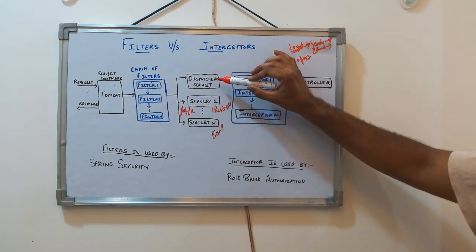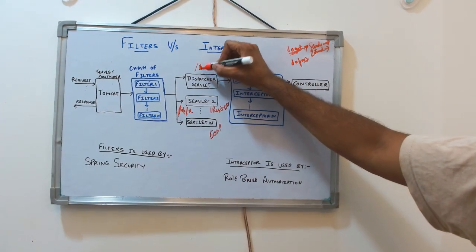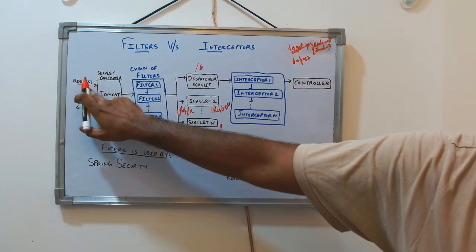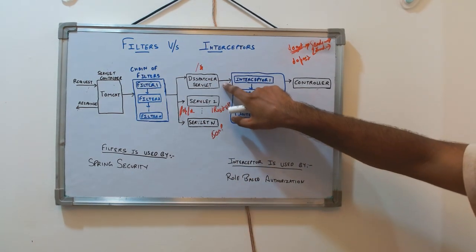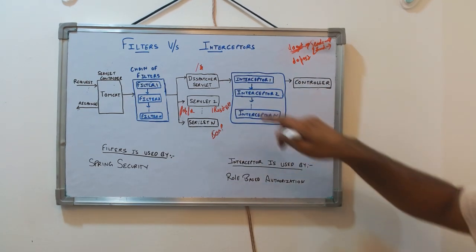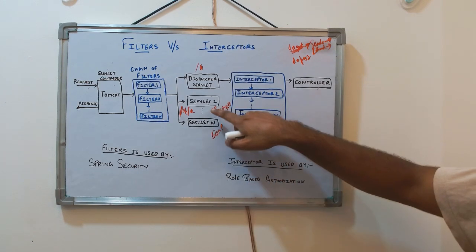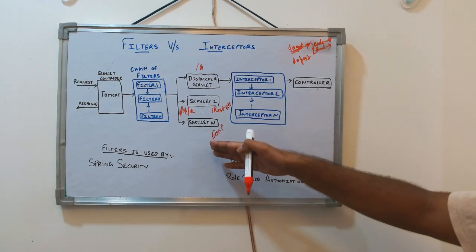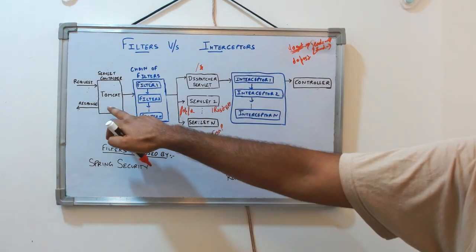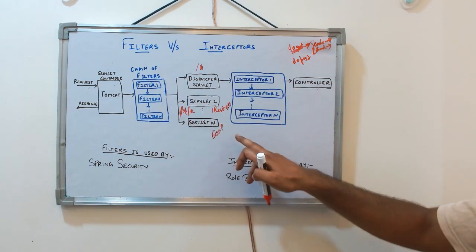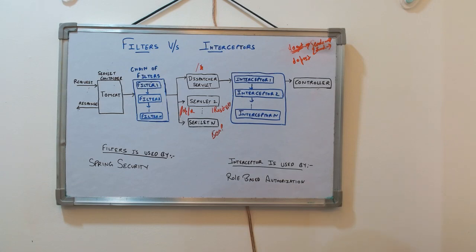In Spring Boot, the dispatcher servlet is the default servlet, configured with slash-star, meaning any API request ultimately goes to the dispatcher servlet. From there, it determines which controller to route the request to. In microservices, multiple servlets are generally not required since all APIs are REST APIs, so we typically don't have multiple servlet scenarios — but there used to be many servlets in monolithic architectures.